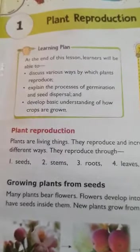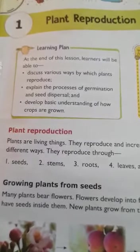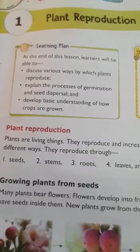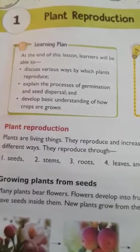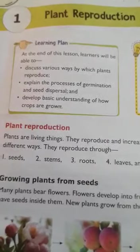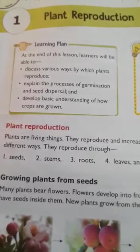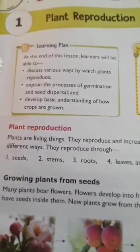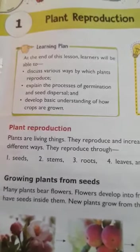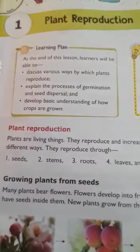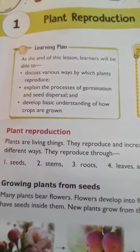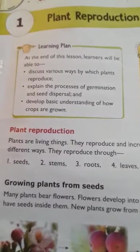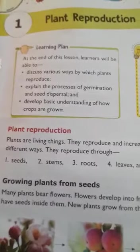What is reproduction? Reproduction means producing the young ones of its own kind. Living things reproduce to increase in number. Plants, animals and human beings are all living things, and they have the property of reproduction to increase their number.